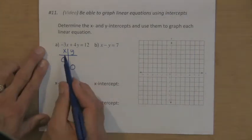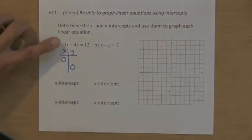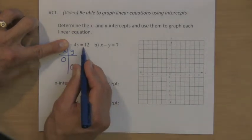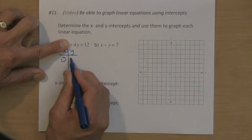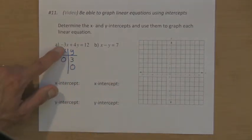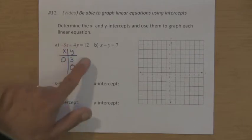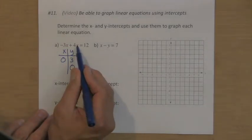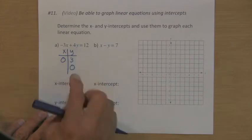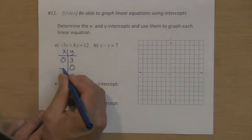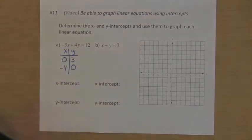So if you put into this equation x is zero, negative three times zero is zero — this whole term goes to zero — and you just have four times some number y makes twelve, so that y value has to be three. If y is zero, four times zero is zero, so negative three times some number x equals twelve, and that value of x has to be negative four. So those are your two intercepts.